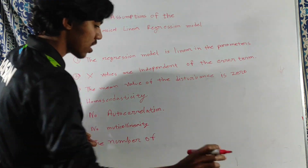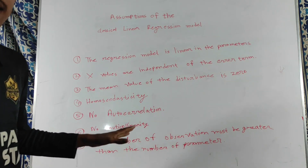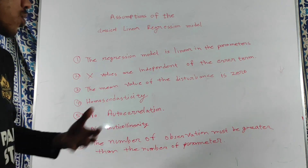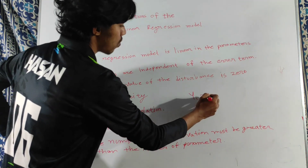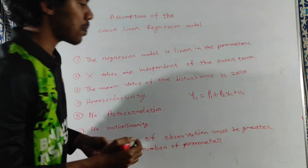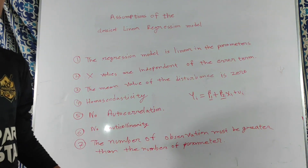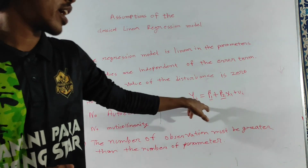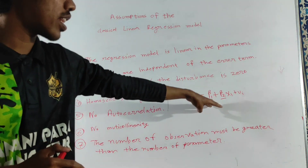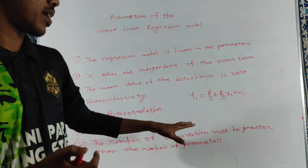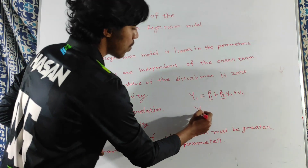The sixth assumption is that the number of observations must be greater than the number of parameters. For example, in a two-variable regression function, we have two parameters: beta1 and beta2. So we must collect at least more than two observations. The more observations we have, the stronger the model.